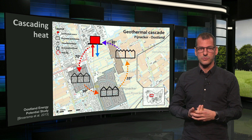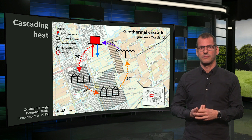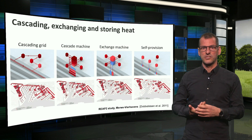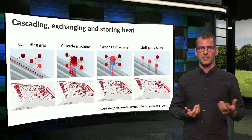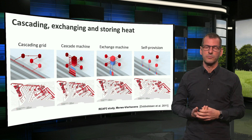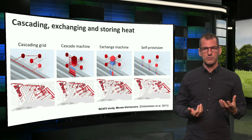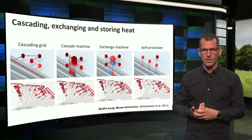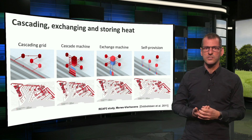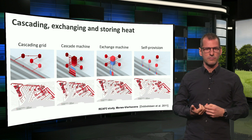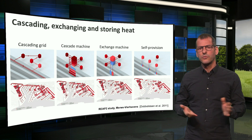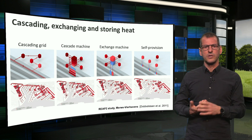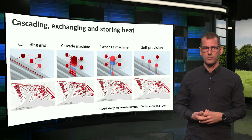Over time, different types of exchanging, cascading, storing and heat have been studied. This is an overview of technical ideas for a city-harbour in Rotterdam, where an optimal system for heat and cold could be elaborated in various ways. I won't go into them — it's just to show that we can become much smarter with energy on the urban scale.